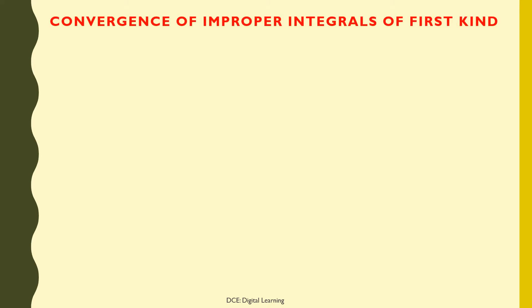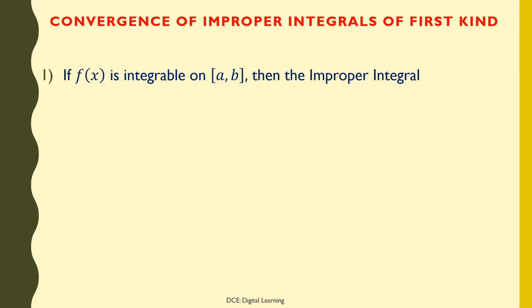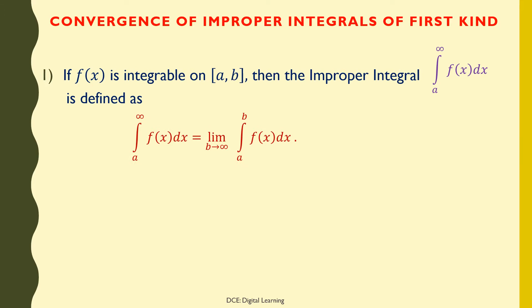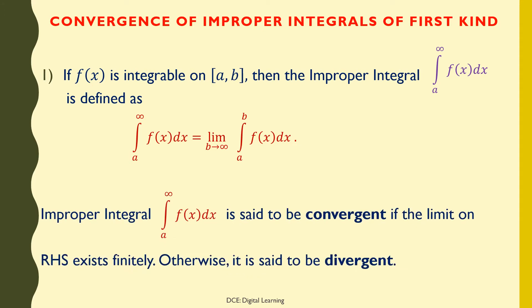Convergence of improper integrals of first kind. If f(x) is integrable on [a,b] for all finite b, then the improper integral of f dx from a to infinity is defined as the limit of the integral of f dx from a to b as b tends to infinity. This improper integral is said to be convergent if the limit on the right-hand side exists finitely; otherwise, it is said to be divergent.